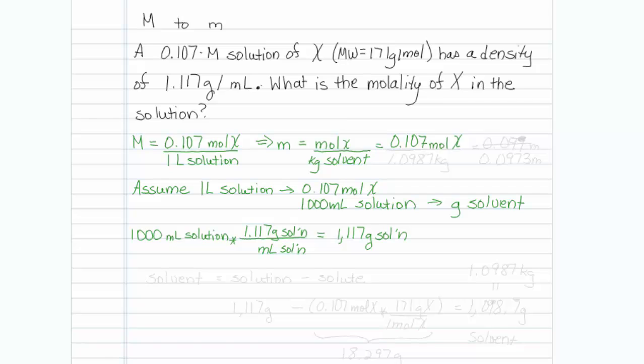Well the difference between solution and solvent is the mass of the solute. So in order to get the mass of just the solvent, we need to take the solution minus the mass of the solute.